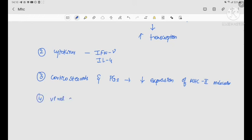Fourth, viral antigens like cytomegalovirus inhibit the beta-2-microglobulin, thereby MHC 1 expression is suppressed.